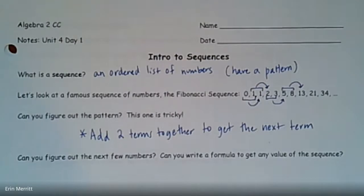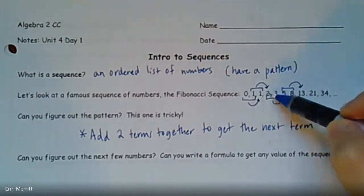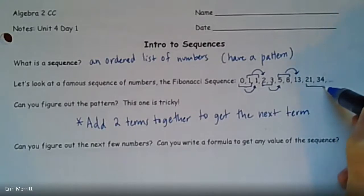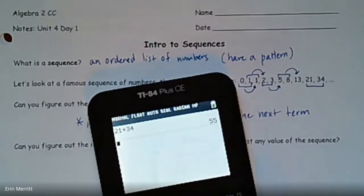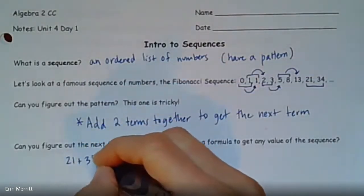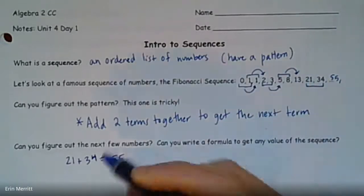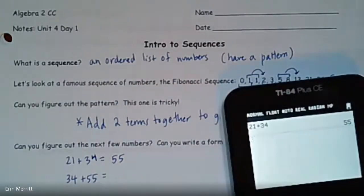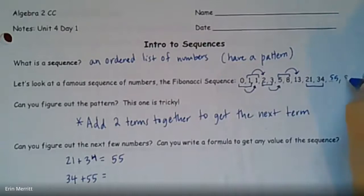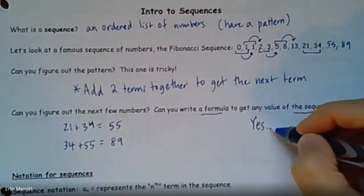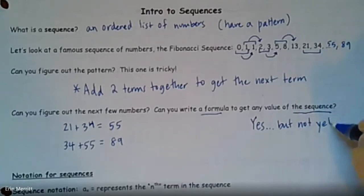So when I say term, I'm talking about the number. I can add those two numbers together and it gives me the next number, and then I can add these two together and it gives me the next one. So when it says can you figure out the next few numbers — yeah, we definitely should be able to. You might need your calculator. So if the list kind of ends here at 21 and 34, to get that next number we'd be adding those together: 21 plus 34 gives us 55. And then 34 and 55 would give us 89. And it would keep on going. When it says can you write a formula to get any value of the sequence — yes, we definitely can. We're not going to do that just yet.